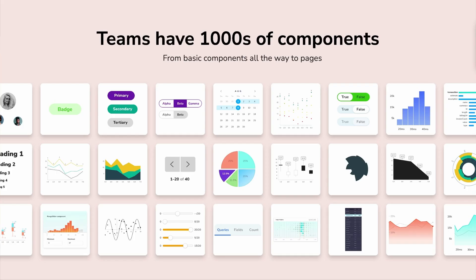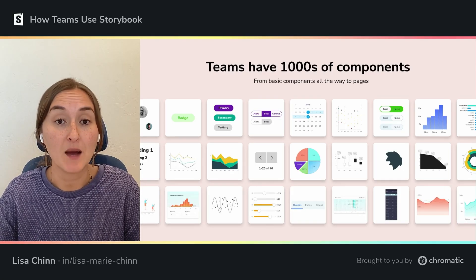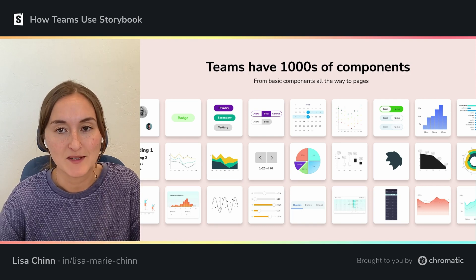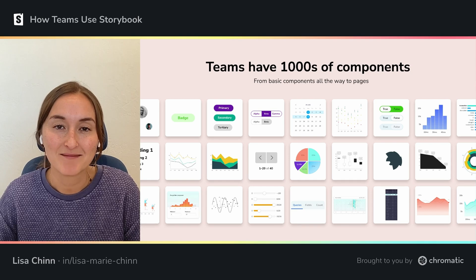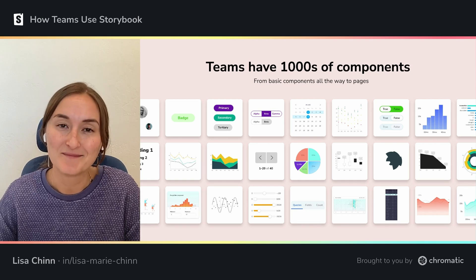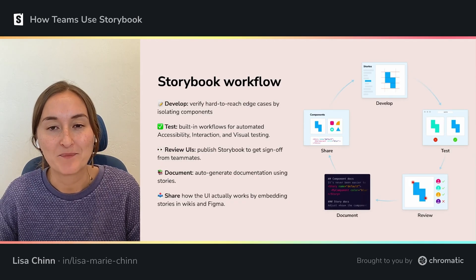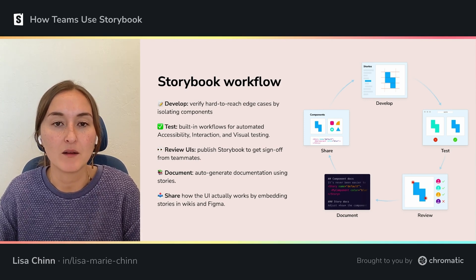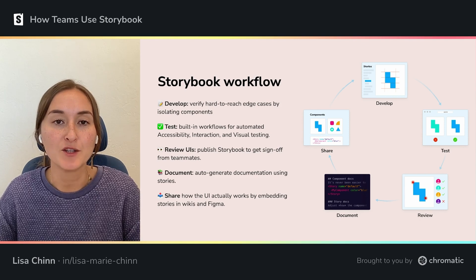As we saw in Dom's talk earlier this morning, we know that teams now build UIs using components — everything from atomic components like buttons and sliders all the way up to full page components. They often end up with hundreds if not thousands of components. Storybook helps you manage this complexity by developing components in isolation so you can verify all their use cases and mock those hard to reach edge cases.